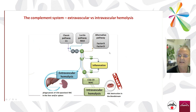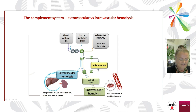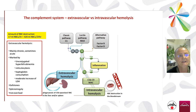The three main pathways — the classic, the lectin, and the alternative — all lead through a cascade of proteins: C3, C2, C4, C3, C5, and then the final complex C5–C9, or MAC. The two main mechanisms are extravascular hemolysis, which mainly results in phagocytosis of C3-opsonized red blood cells mainly in the liver and partially in the spleen, and intravascular hemolysis, where red blood cell destruction occurs directly in the bloodstream.